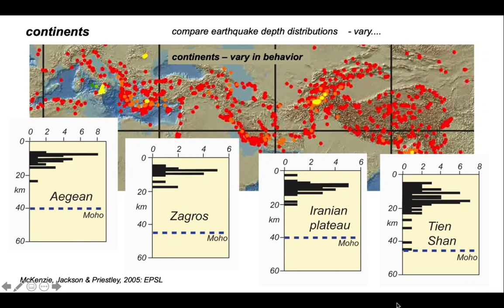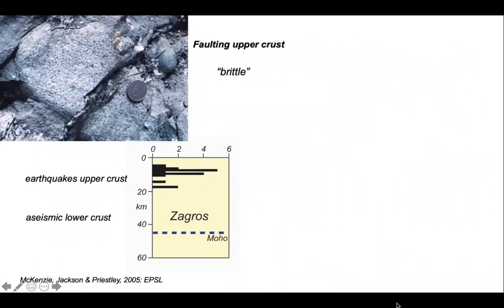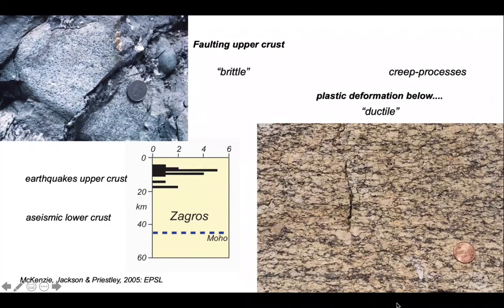So what do these earthquake distributions mean? Let's think about this in terms of rock deformation. Earthquakes occur on faults, and faulting appears to be restricted for the Zagros dataset to the upper crust. Frictional sliding on faults is described as a brittle process. We can describe the lower crust as being aseismic — there are no earthquakes there. But that doesn't mean there's no deformation; rather, it occurs by a different mechanism, possibly creep processes — plastic deformation such as we can recognize in exhumed deeper crustal rocks like this sheared granite.